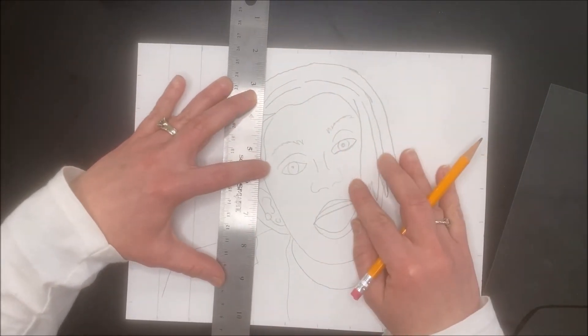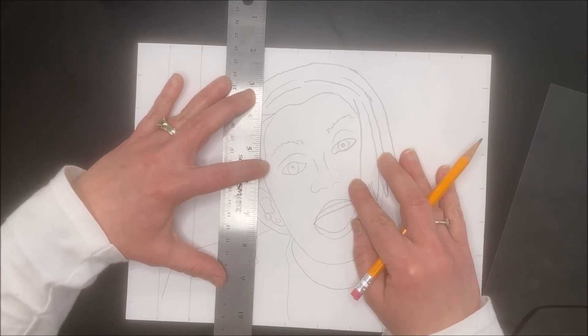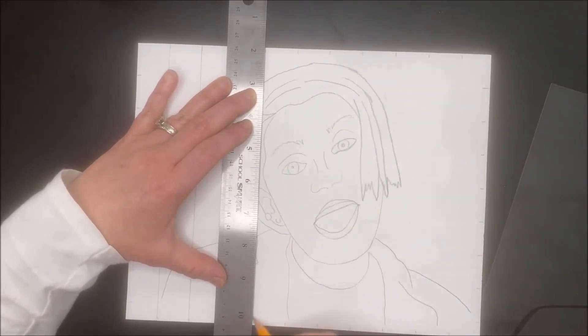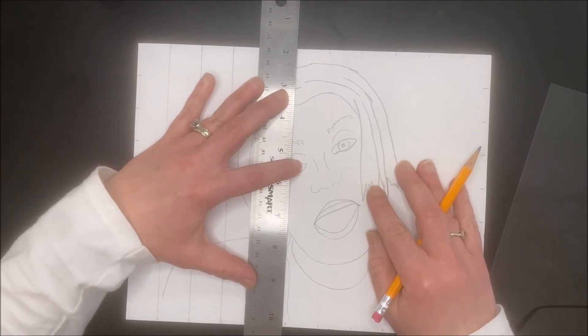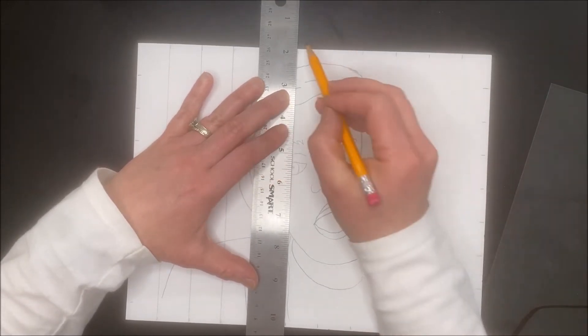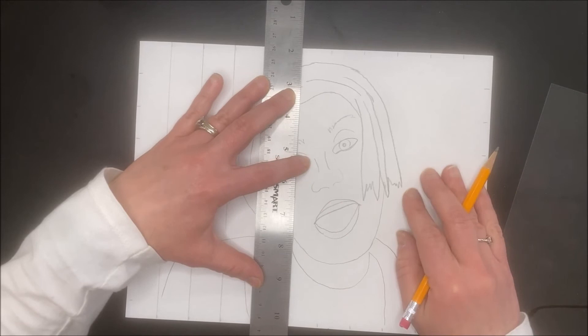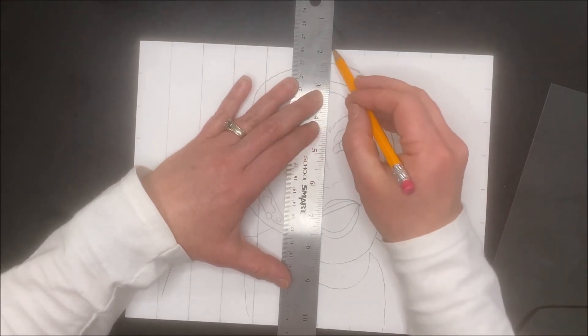Draw a line. All right, so what we're doing right now is we're making a grid on our paper to set ourselves up for our drawing - our coloring portion. We already drew it, but this is going to be for our coloring portion now.